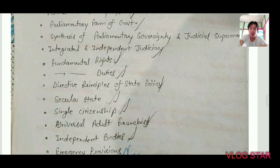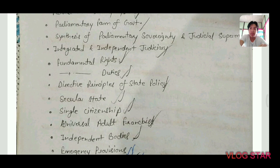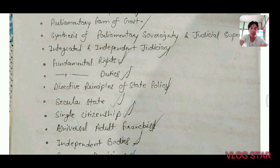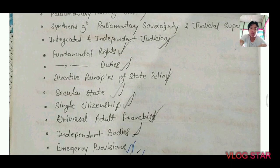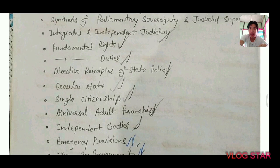There is also a synthesis of parliamentary sovereignty and judicial supremacy. Parliament is sovereign and can make any laws, but the judiciary can review those laws through judicial review. So parliament makes laws but the judiciary can still review them — this is the synthesis between parliamentary sovereignty and judicial supremacy. Additionally, there is an integrated and independent judiciary with the Supreme Court at the apex of all courts.